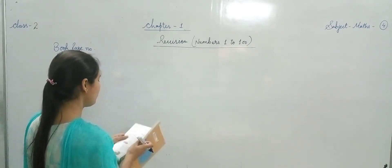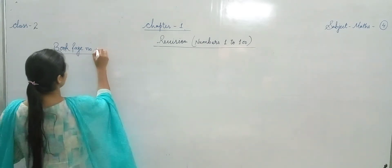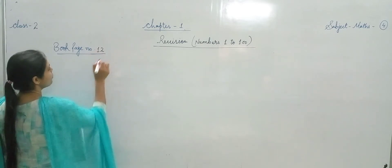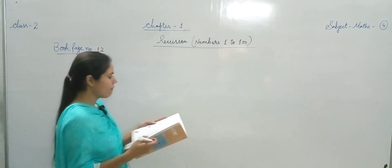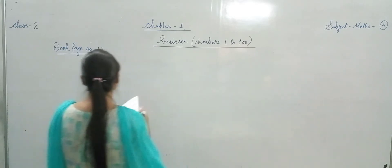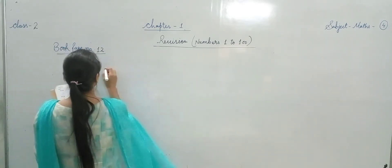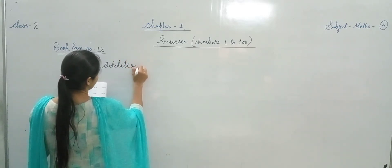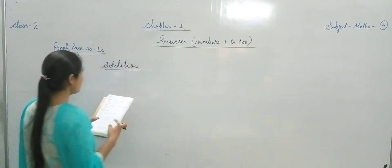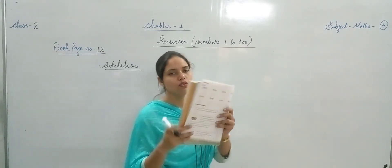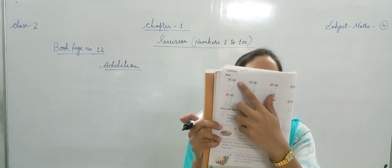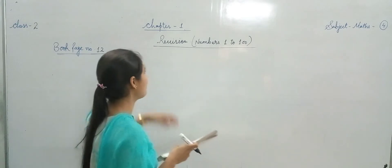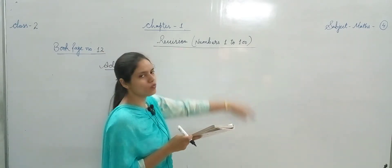Now let's continue with page number 12. Turn to page number 12 in your book — apni book mein page number 12 open kar lijiye. There is a heading written on the top of your page: Addition. Page number 12 hai aapka, chapter number 1 hai — revision numbers 1 to 100.